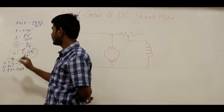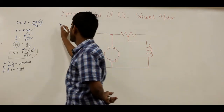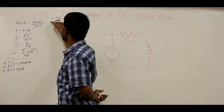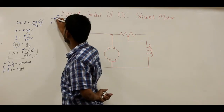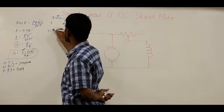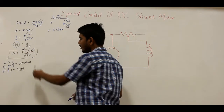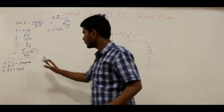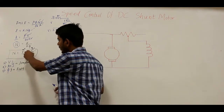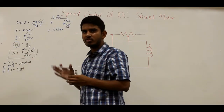Writing N as the subject of the formula: N = E / KΦ. Drawing the basic DC motor circuit with applied voltage V, armature resistance RA, armature current IA, and back EMF E, we get V = E + IA·RA, therefore E = V − IA·RA. Substituting, N = (V − IA·RA) / KΦ.